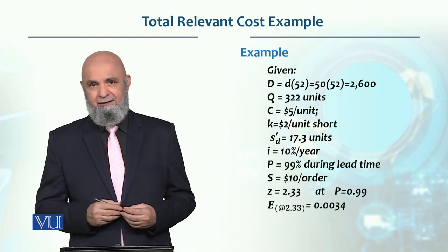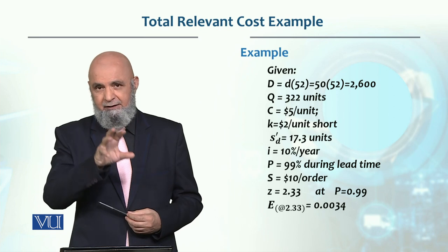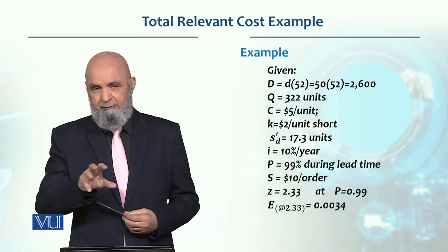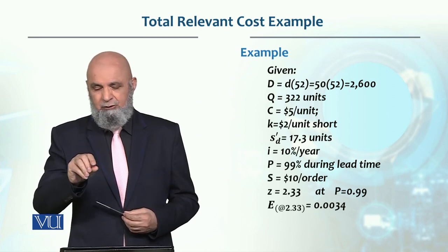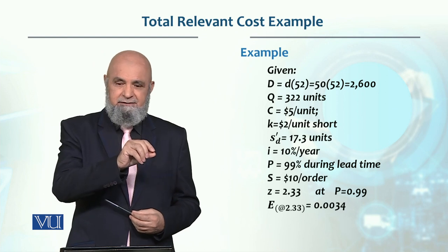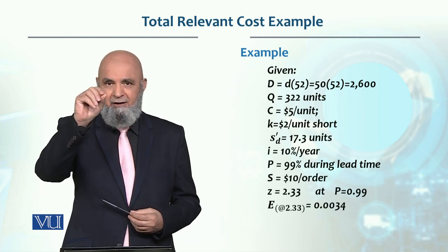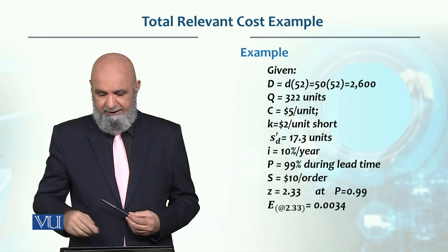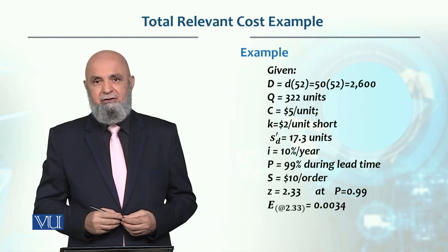If you go to the standard normal table and look for the 0.99 figure, you'll find the related Z value in the rows and columns. When you sum those, it will be 2.33.